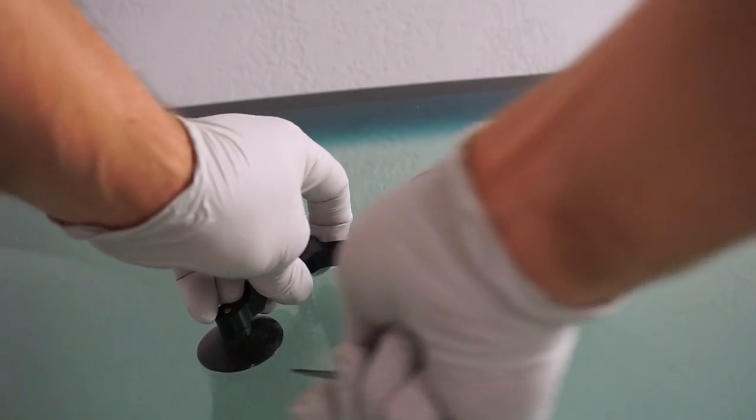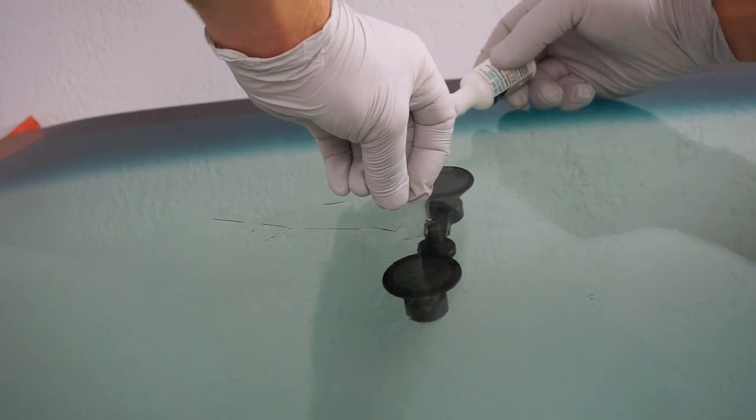If there are any remaining portions of the crack that need to be sealed off with film tabs and Crackweld 2000 resin now is the time to do so.